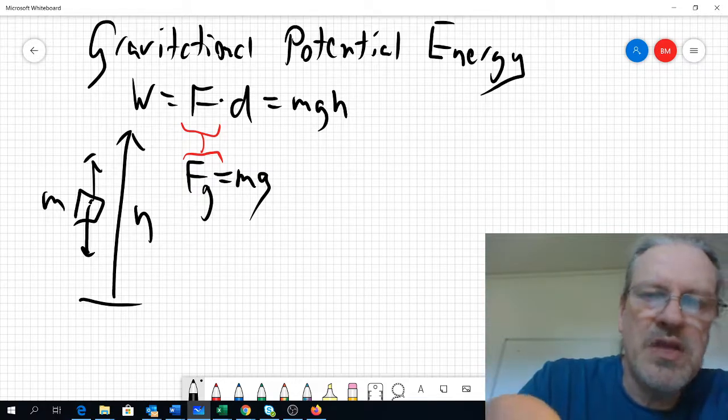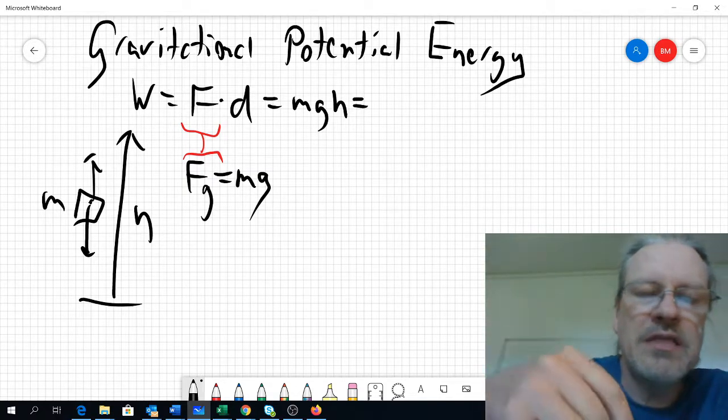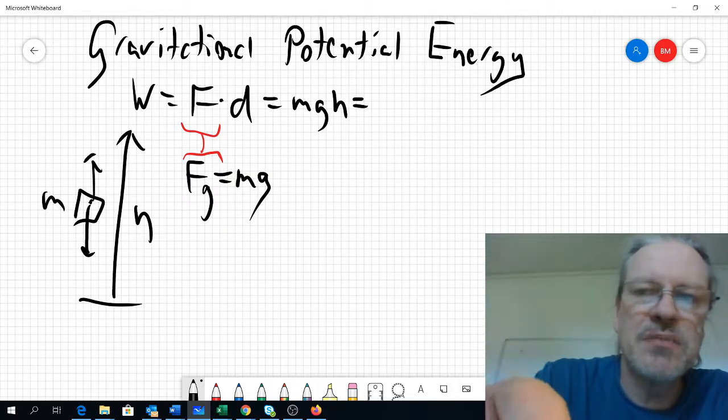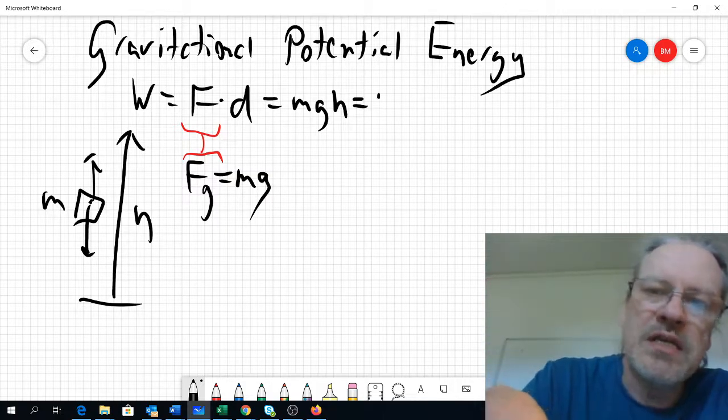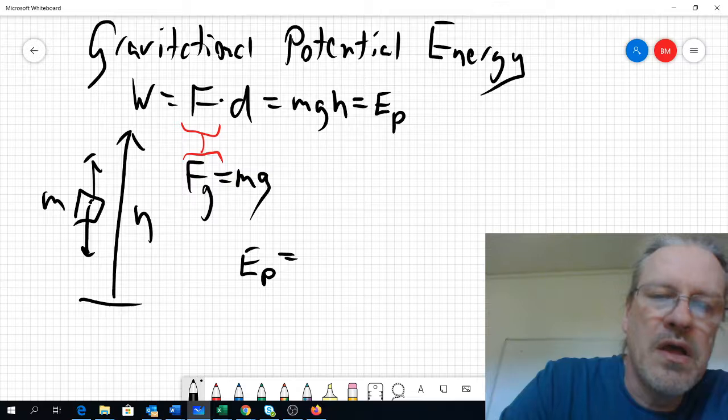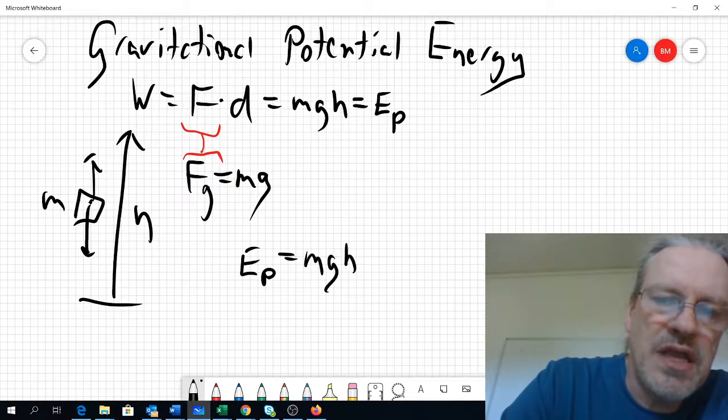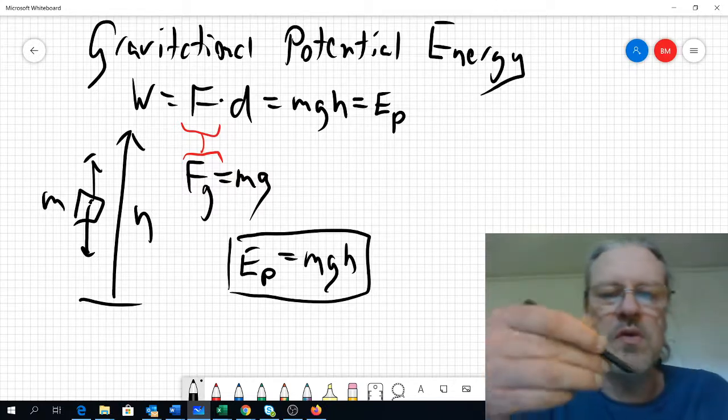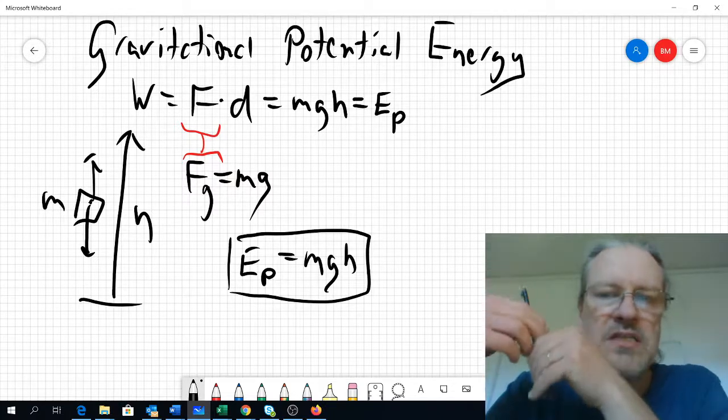And that will end up being our work we need to put in, and that will be stored in the object as gravitational potential energy. So we call that energy potential. We can write the formula down here: energy potential equals mgh. And that is our defining formula for the gravitational potential energy.